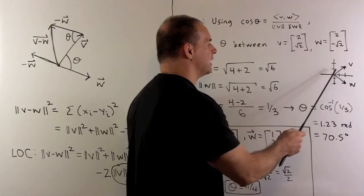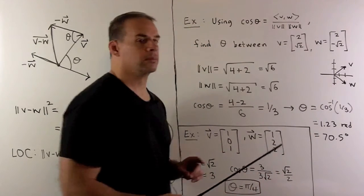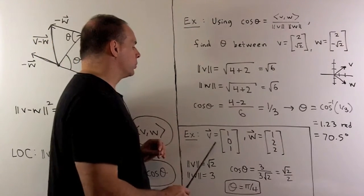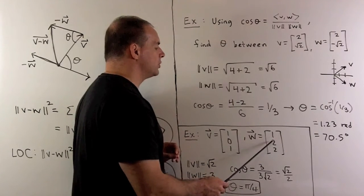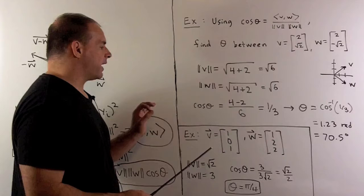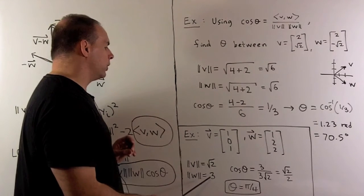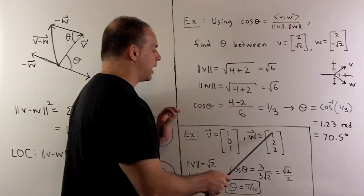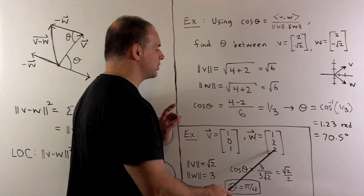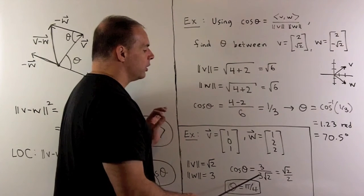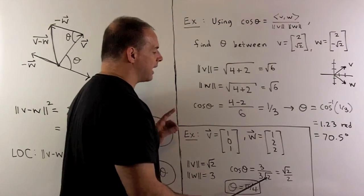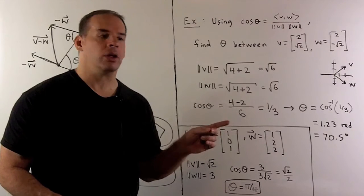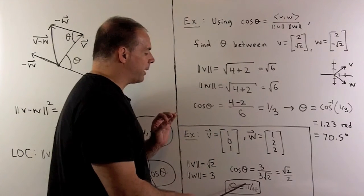Another example using vectors in R3: v equals (1, 0, 1) and w equals (1, 2, 2). The lengths are √2 and 3, respectively. The dot product is 1 times 1 plus 0 times 2 plus 1 times 2, giving 3. Dividing by the product of the lengths gives 3 divided by 3√2, which equals 1 over √2 or √2 over 2. This is a familiar value, so the angle is pi over 4.